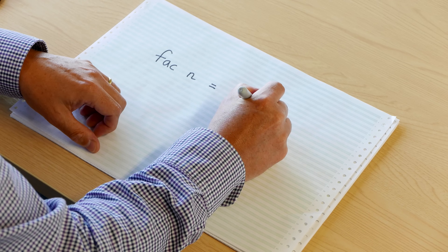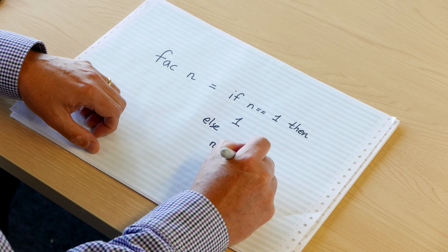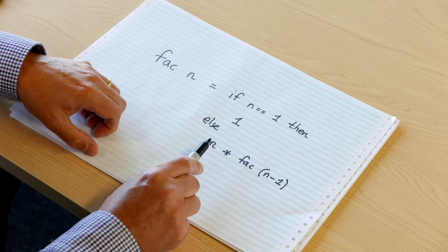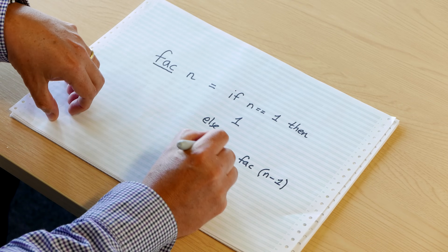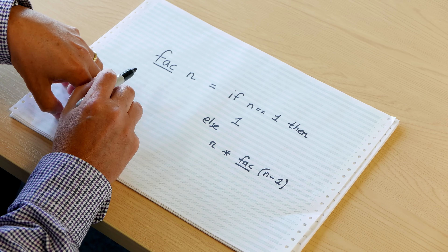If you give the factorial function a number n, it's going to make a choice between doing one of two things. If the number you give it is already 1, which is the point where you're trying to count down to, then there's nothing to do — we just return 1. Otherwise, we'll take the number you're given and multiply it by the factorial of its predecessor. So if n was 3, we would take 3 times the factorial of 2. This is a recursive function because we're defining factorial in terms of itself.